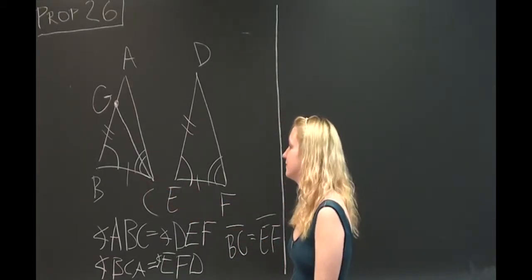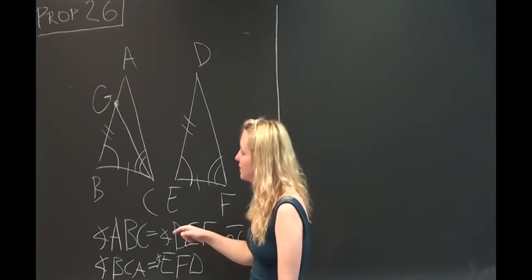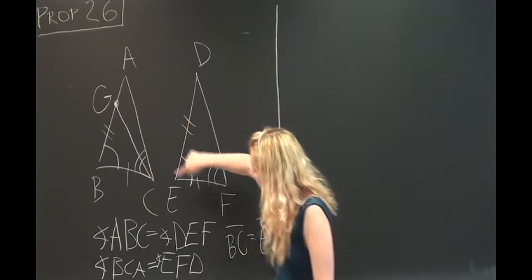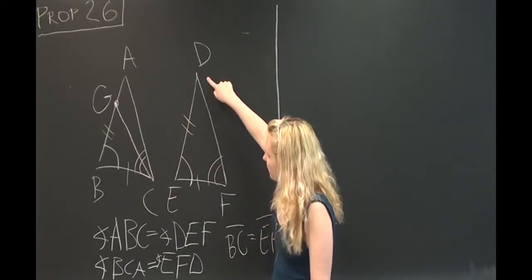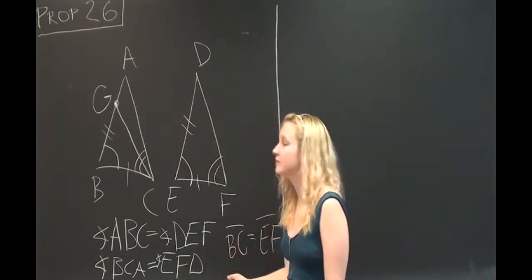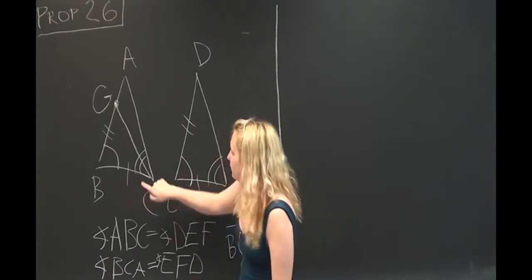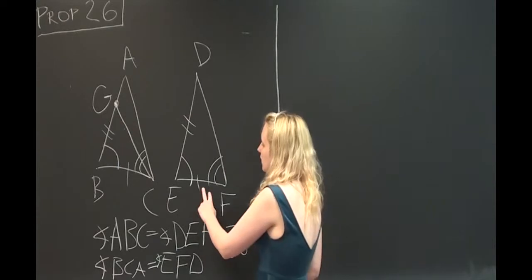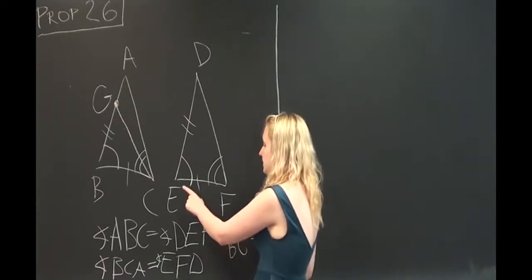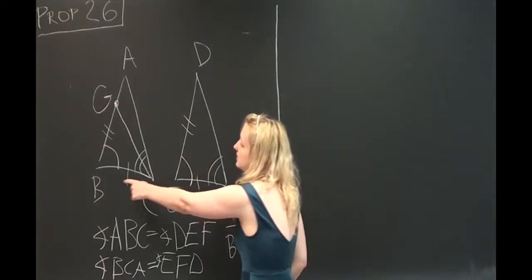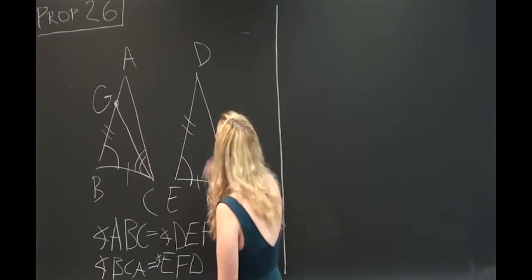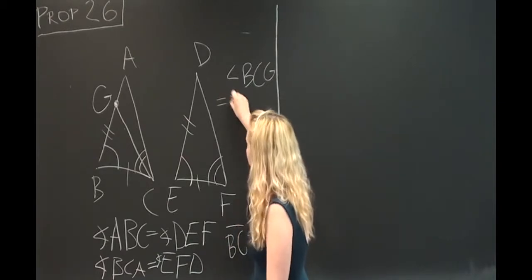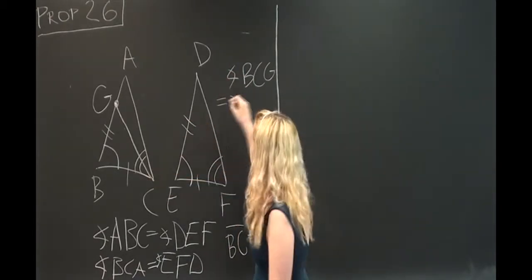However, this is impossible because we already know that angle BCA and angle EFD are equal because that was our given. But now we're saying that angle BCG and angle EFD are given. And because both of those equalities have EFD in them, we can say that BCG is equal to angle BCA.